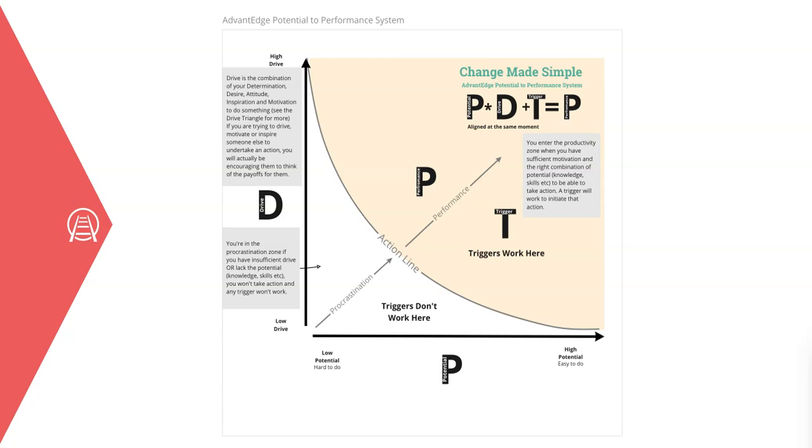The advantage potential to performance system explained. I'm going to explain how performance is unleashed using the advantage potential to performance system model. Performance happens when three things are aligned at the same moment: your potential, your drive, and a trigger.